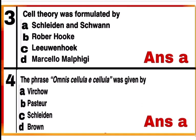Question 3: Cell theory was formulated by option A — Schleiden, a German botanist in 1838, and Schwann, a British zoologist in 1839. Both observed many plant and animal cells respectively and formulated the cell theory, proposing that both animals and plants are composed of cells and their products.